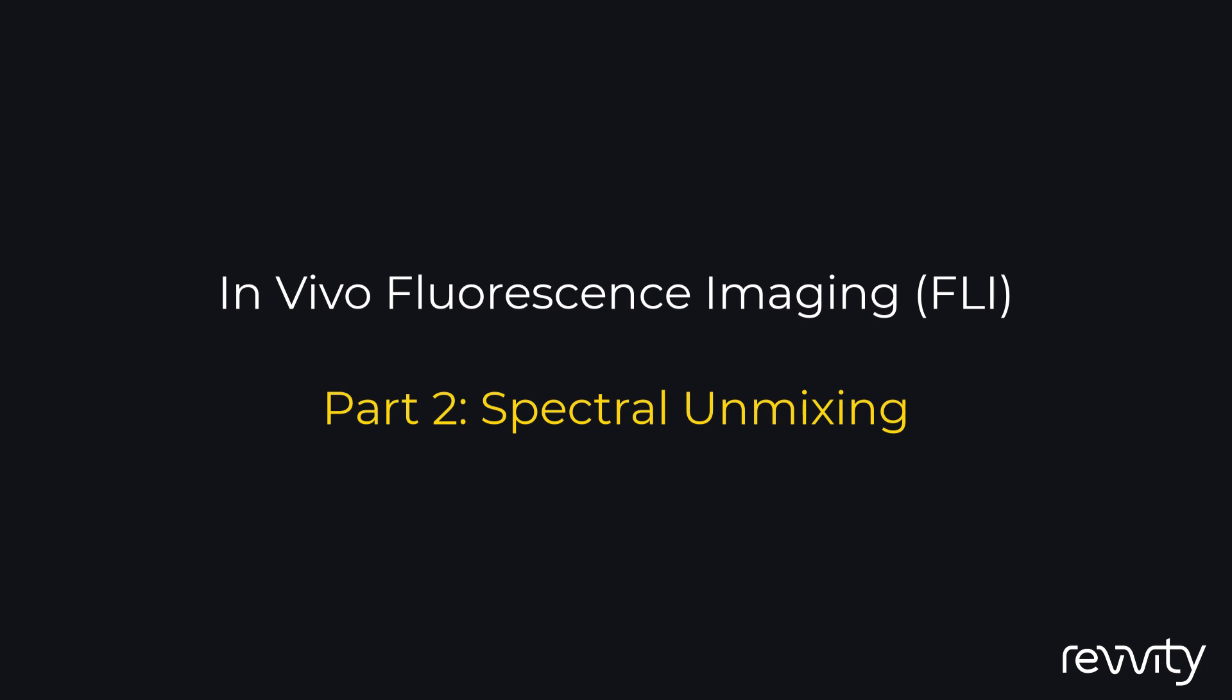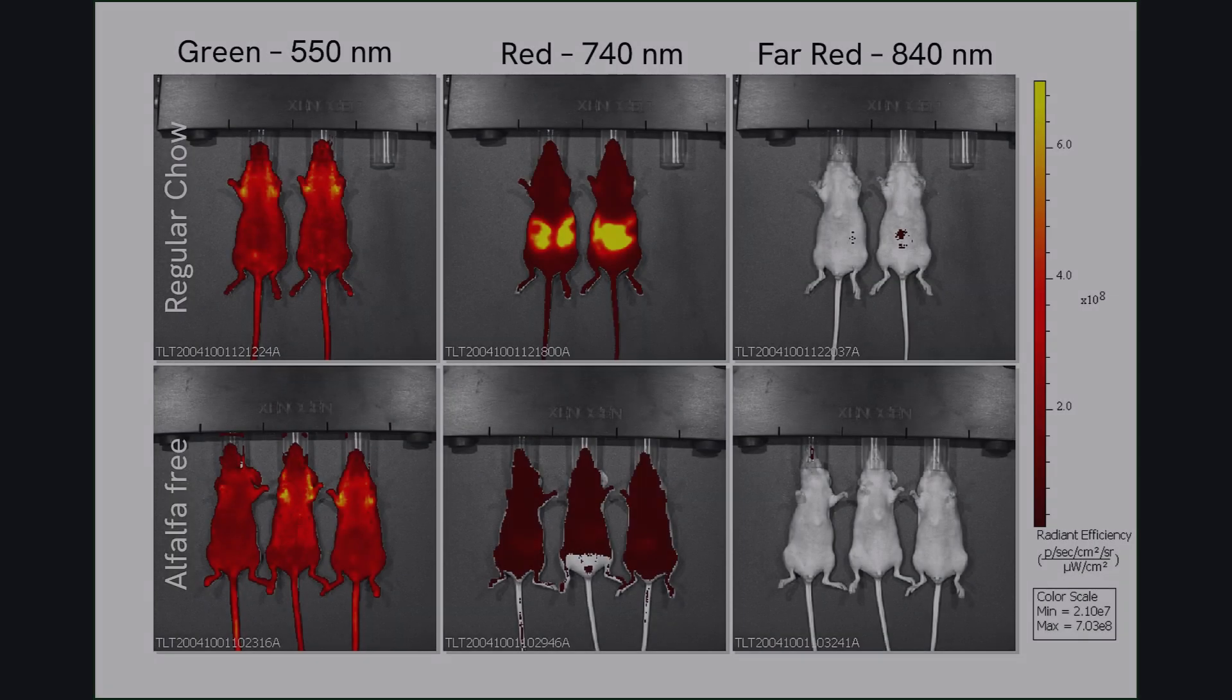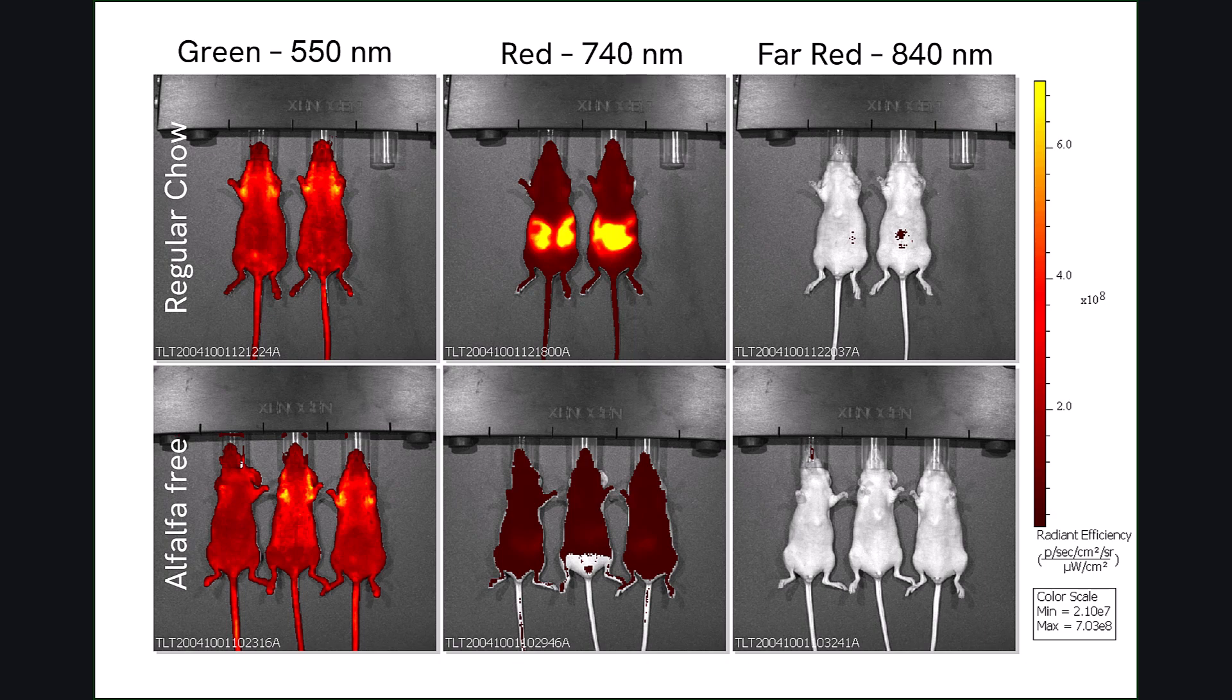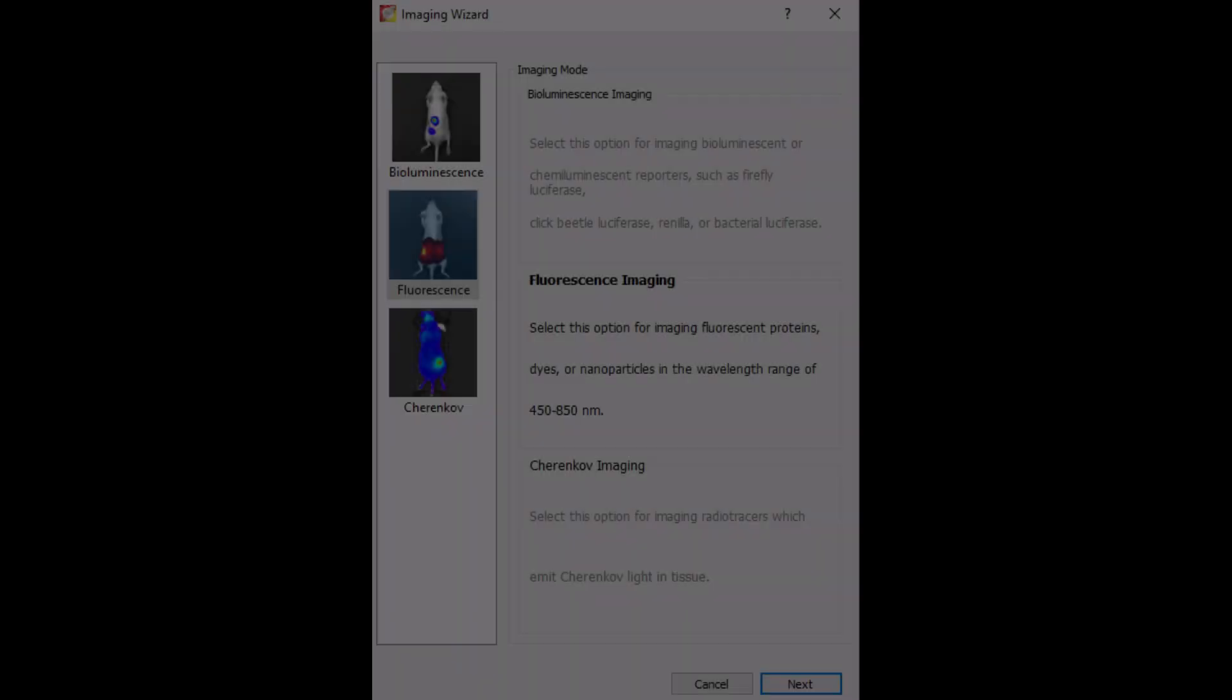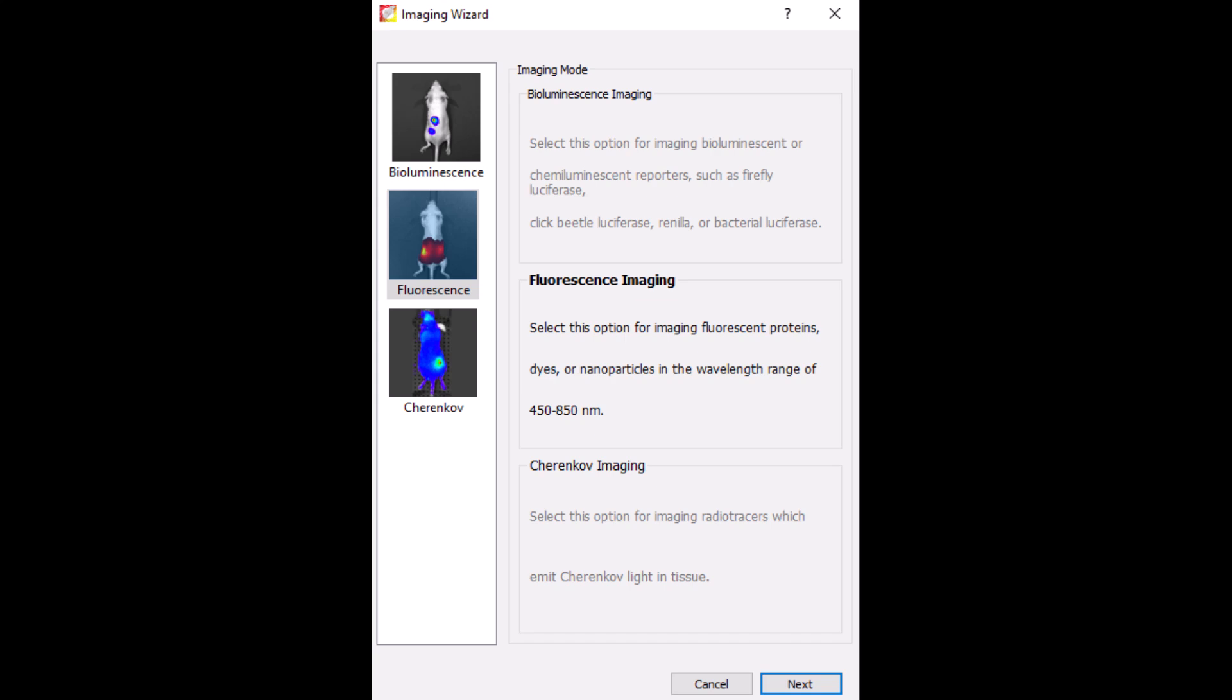This video is a continuation of the experiments outlined in the first in vivo fluorescence video. There we discussed sources of background signal including chow and tissue autofluorescence, and the appropriate control groups that are key to a successful in vivo imaging experiment.